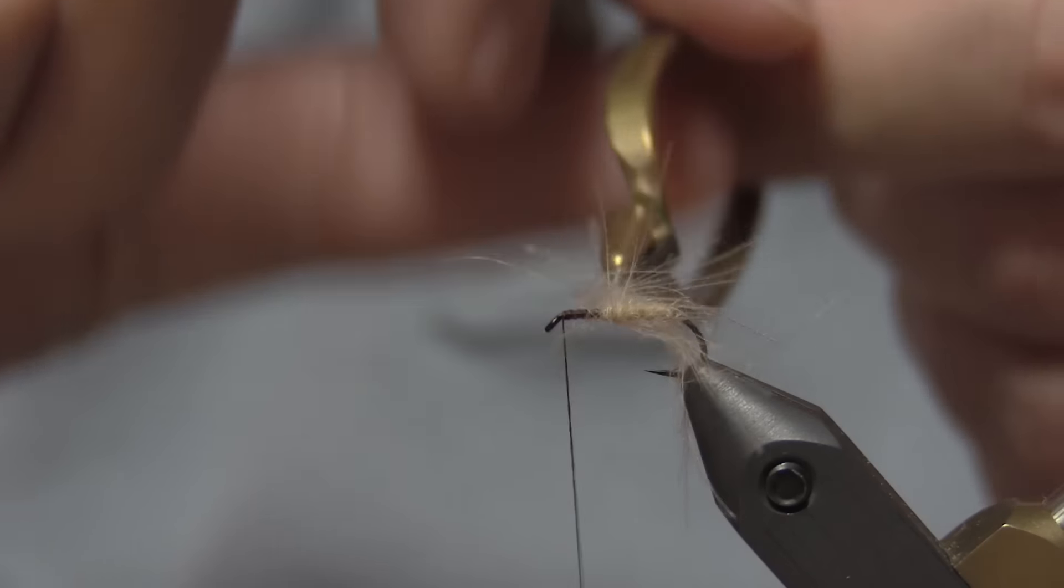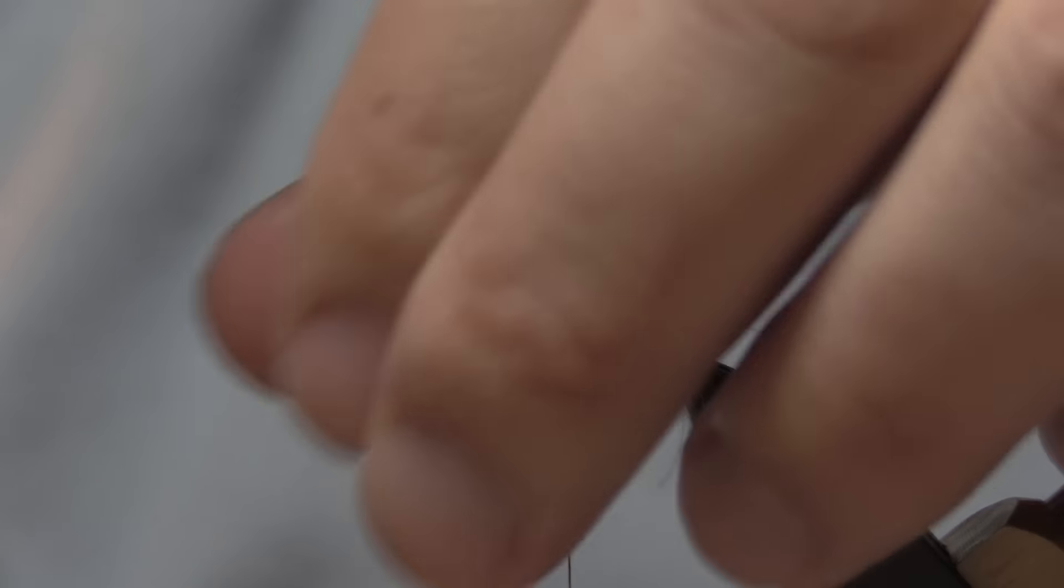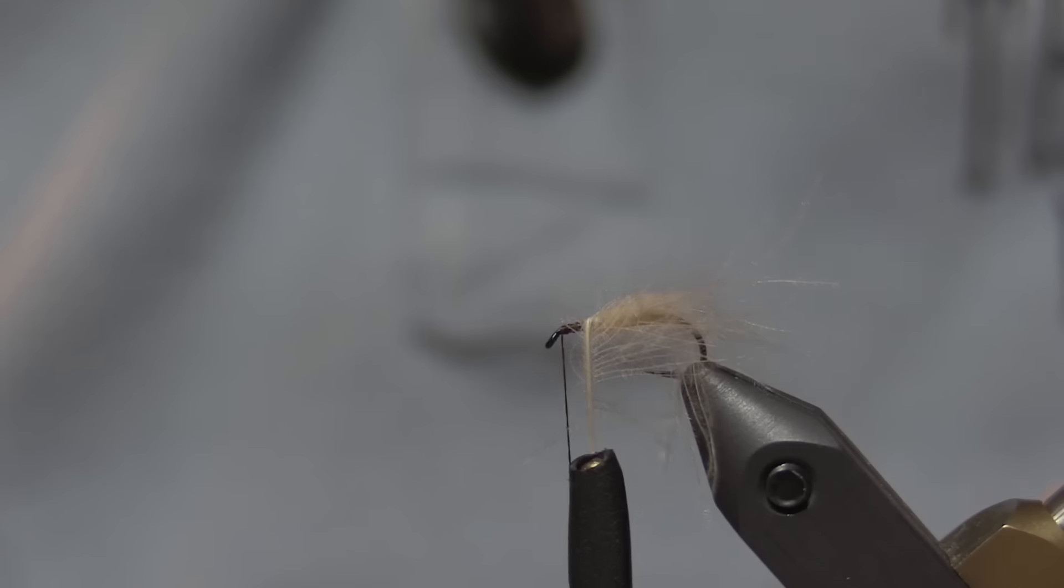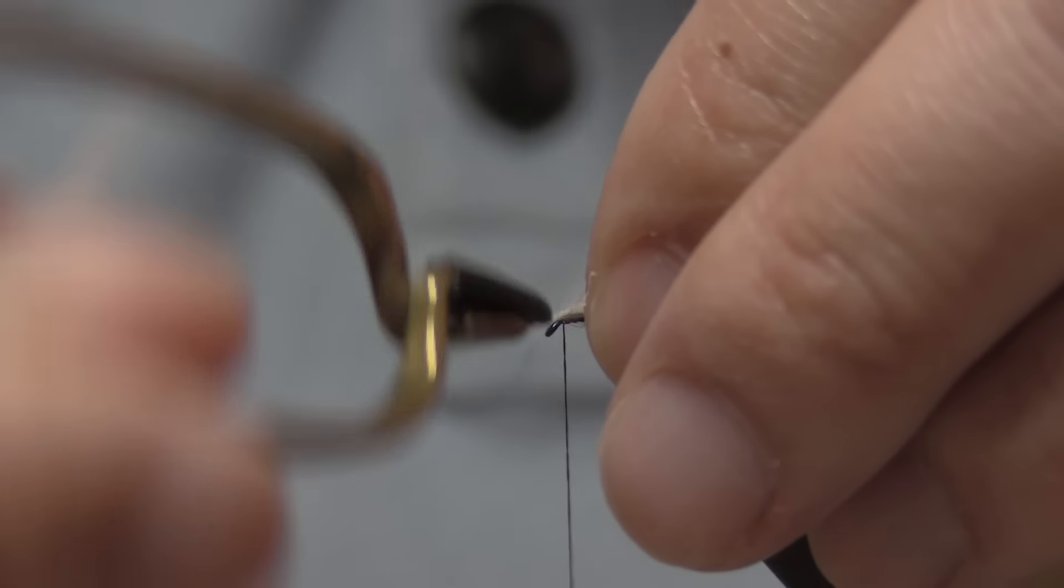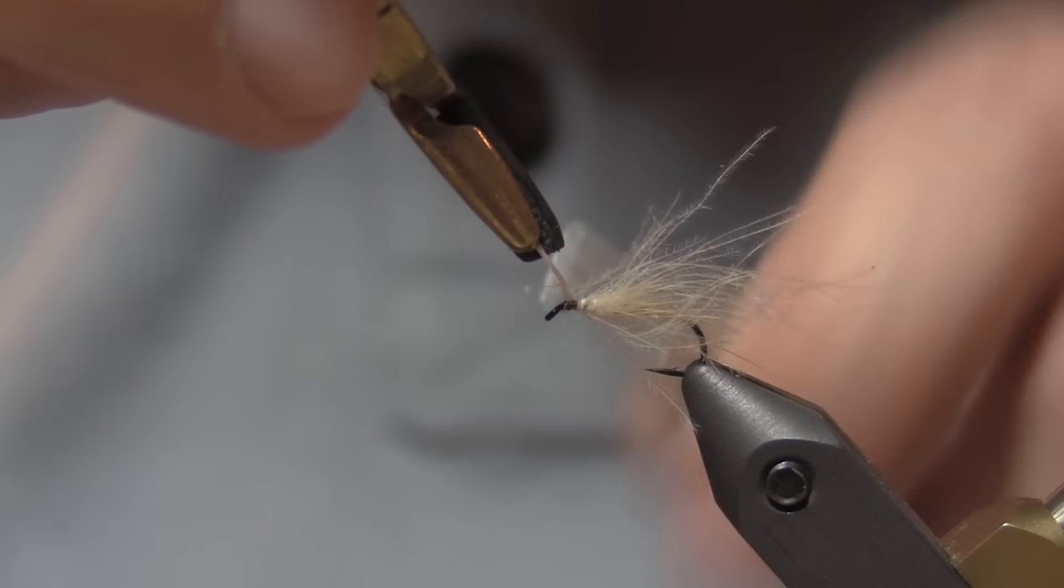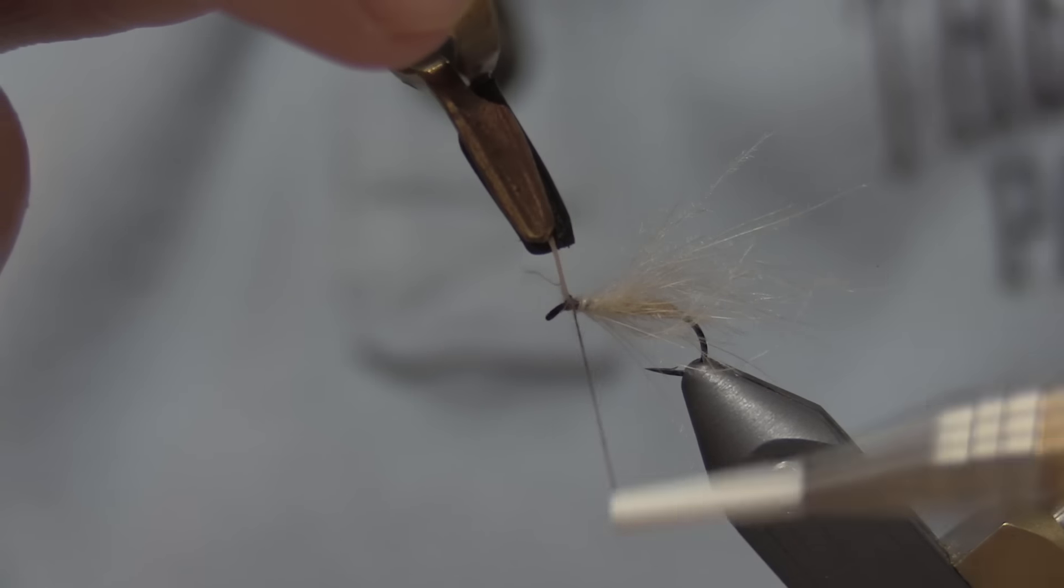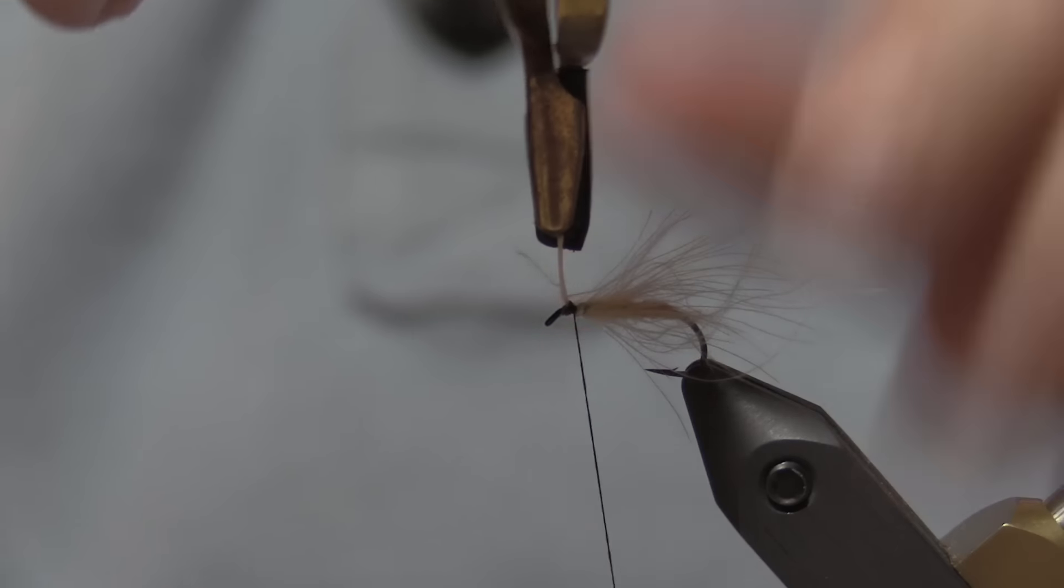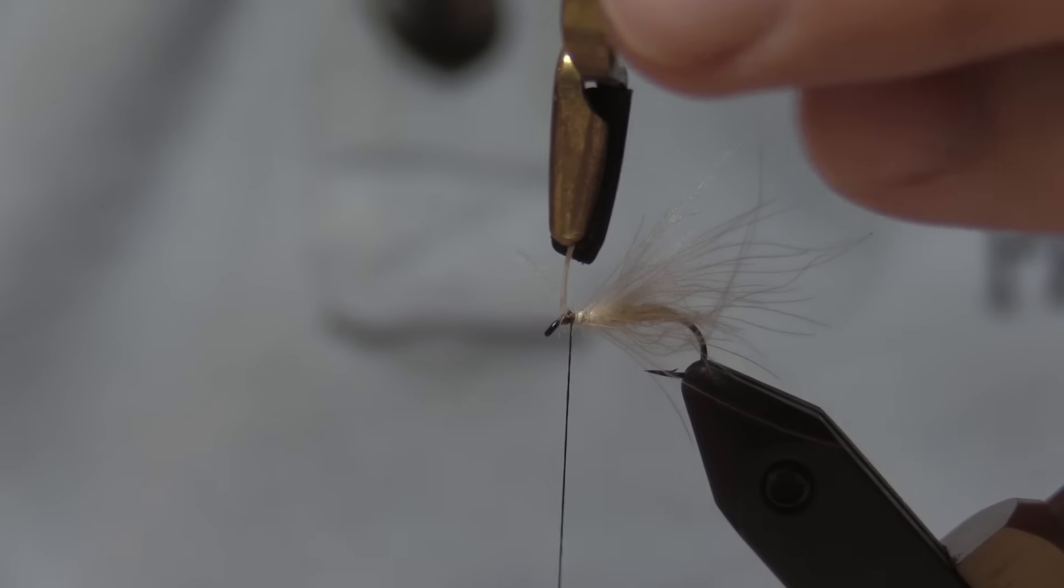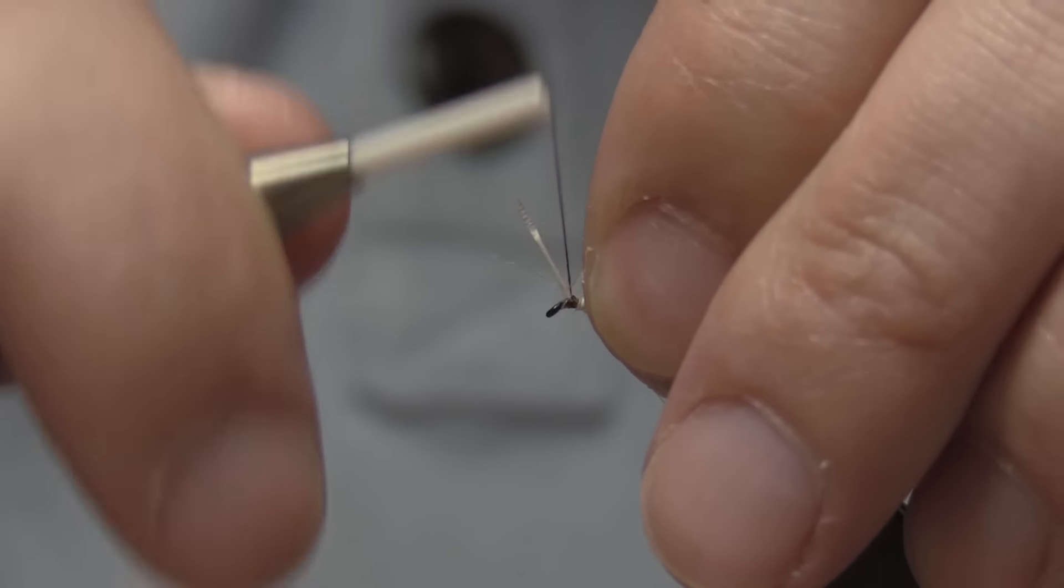Stroke them all back. Let's get to the hook eye. I put two wraps right around it, and I'll hold a little tension while I release the hackle pliers. Then I'll take one more tight wrap.